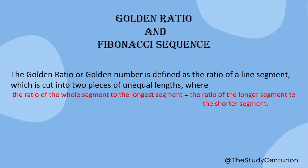What is the golden ratio? The ratio of the whole segment to the longest segment is the same as the ratio of the longer segment to the shorter segment. We have two different quantities that are interrelated. For example, if the total marks in an exam is 50 and I scored 40, then 40 out of 50 is the fraction — that is a ratio.